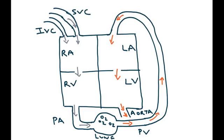Now this is essentially a diagram of the heart working normally. So what is the scenario in total anomalous pulmonary venous return?